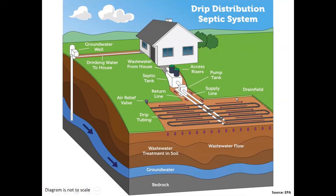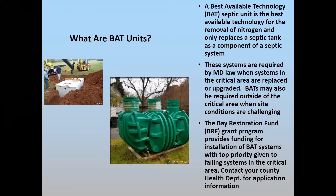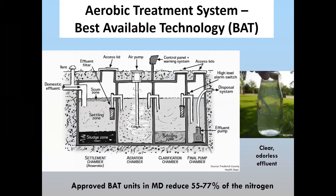Here's a drip system, where tubes are laid out to distribute the wastewater evenly over the entire soil treatment surface. These are typically placed about 6 to 12 inches below the surface of the soil. Then we have BAT units — another term is advanced treatment unit. In Maryland we use the term best available technology. You can see from this photo that this particular unit has three access ports located at the soil surface.